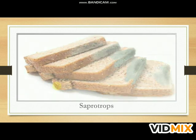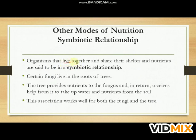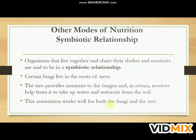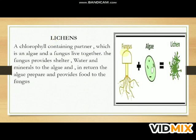Another mode of nutrition is the symbiotic relationship. Organisms that live together and share their shelter and nutrients are said to be in a symbiotic relationship. Certain fungi live in the roots of trees — the tree provides nutrients to the fungus, and in return receives help from it to take up water and nutrients from the soil. Lichen is a common example: algae and fungus live together. The fungus provides shelter, water, and minerals to the algae, and in return the algae prepare and provide food to the fungus.